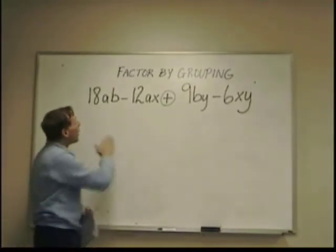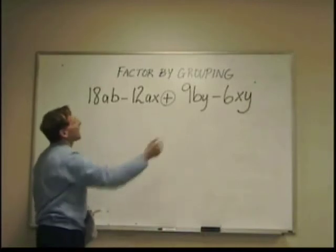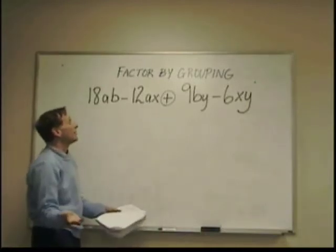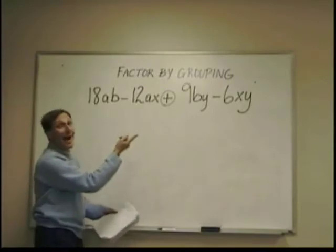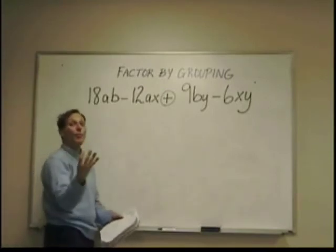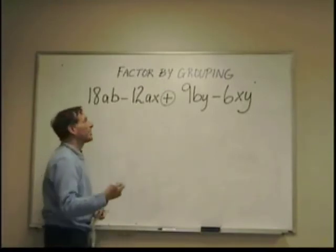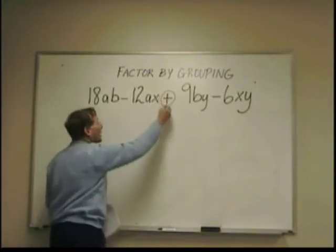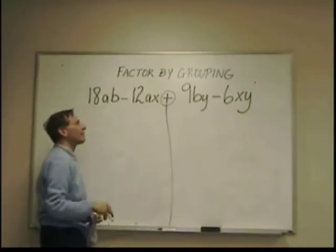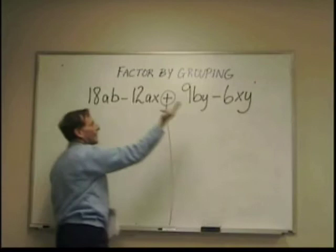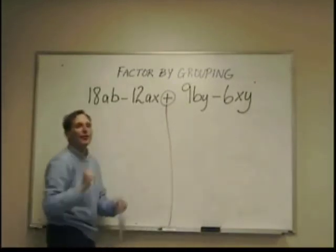Now, nothing is common across the board. I can't do common factoring. It's not the difference of two squares. This is not a trinomial. It has four parts, not three parts. So, here's what I do. I'm going to divide it in half. I'm going to group these two together and these two together and factor them separately.